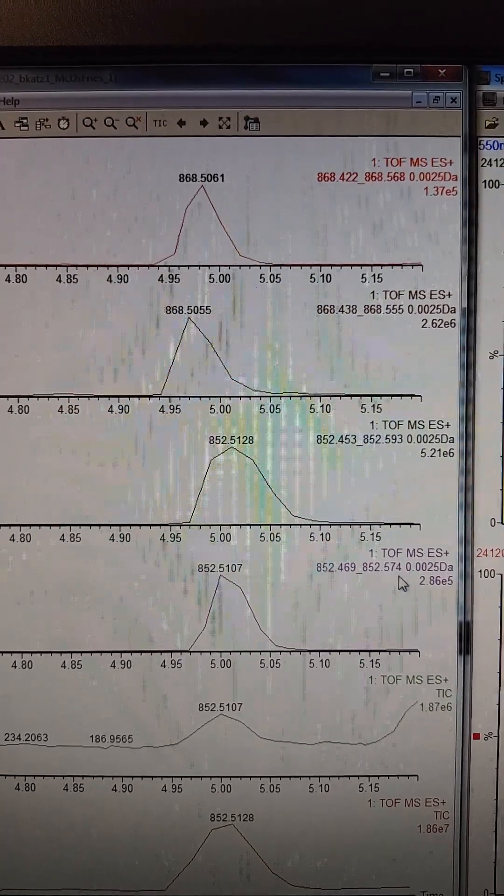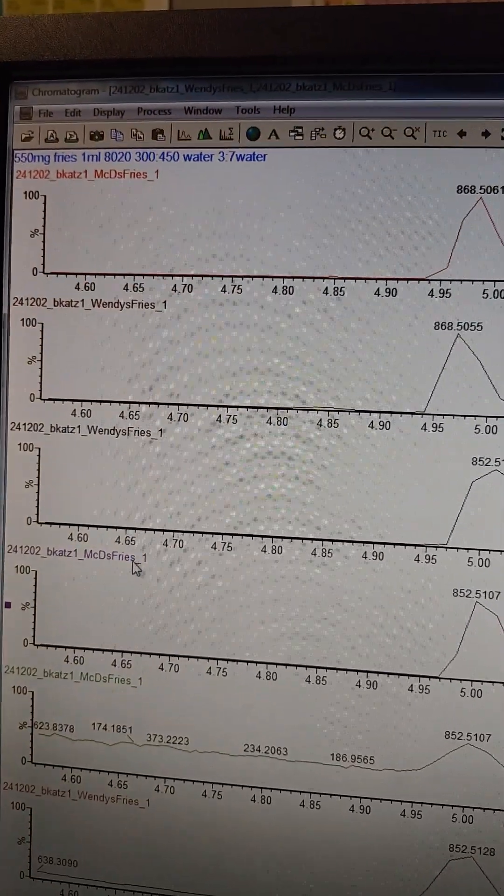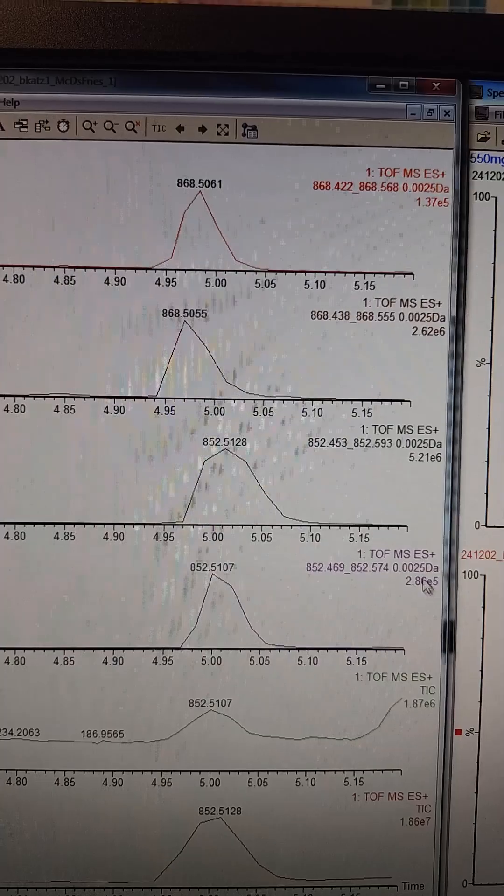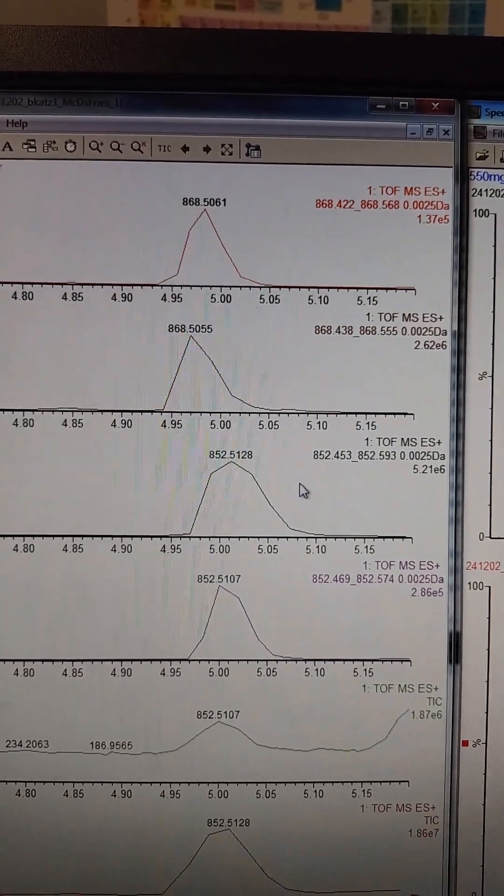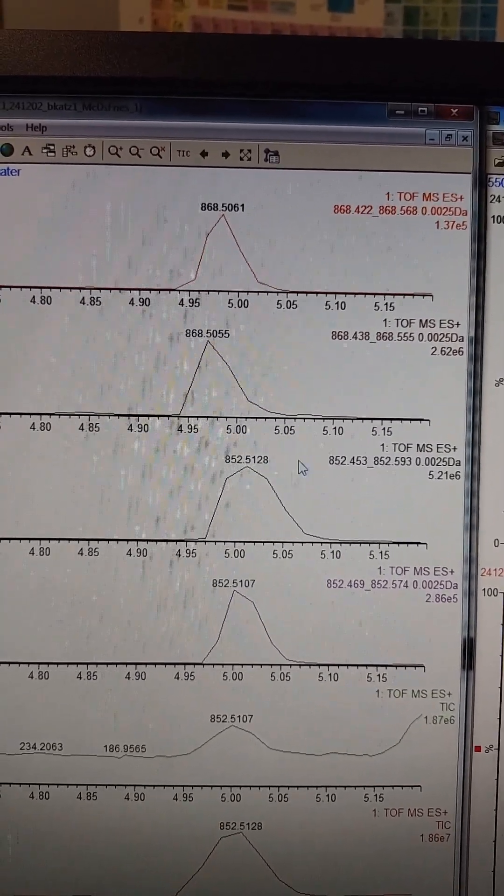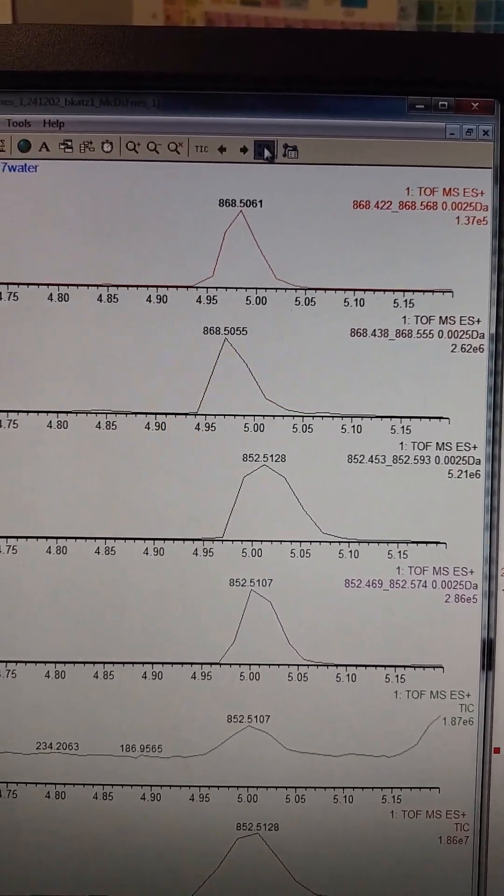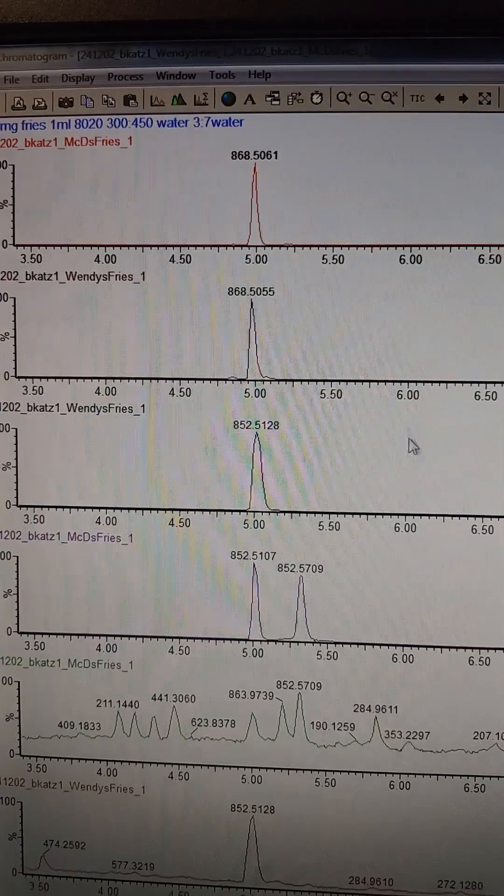And then the same thing with the 852 mass. You can see in the McDonald's, we're at like 2e to the 5. And over here we have 5e to the 6. I mean in 5e to the 6, like e to the 6 is kind of what I've been seeing in french fries. So the McDonald's is so incredibly low.